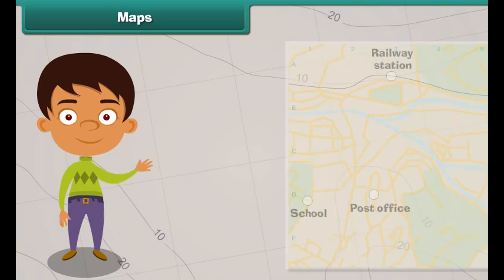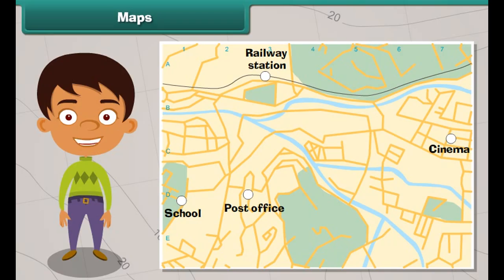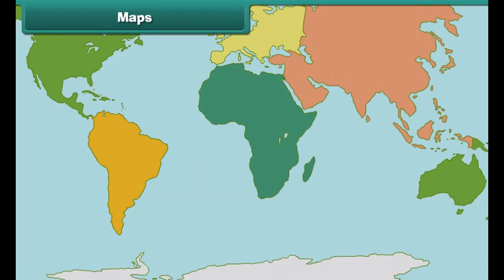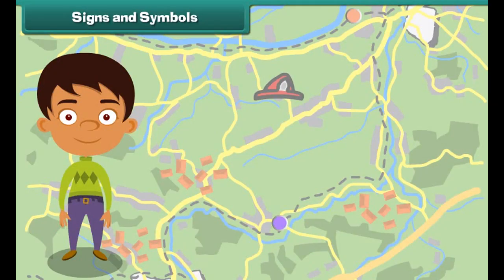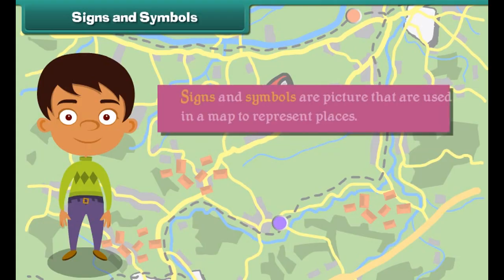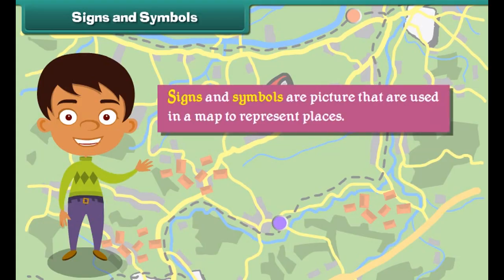We often face problems locating a new place. Maps are used to solve such problems. A map shows the countries of the world, their capitals, cities and towns. It also shows different landforms and water bodies present on the earth. A map uses signs and symbols to indicate a place.